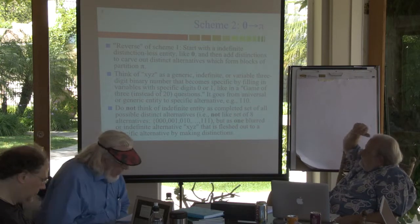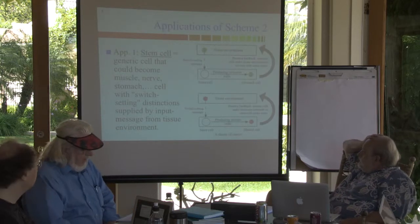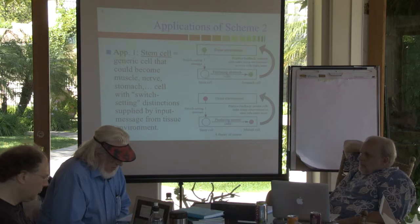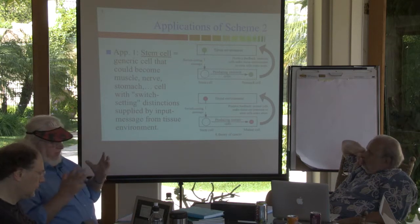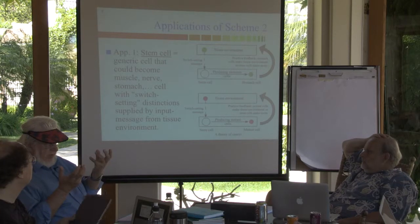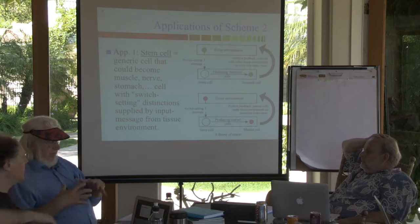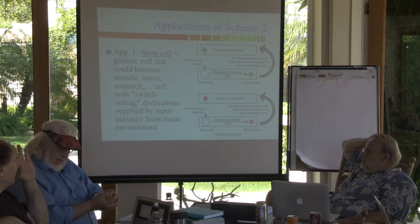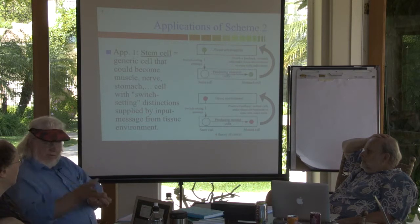Application: stem cells. A stem cell is something like all the possible types of cell where they haven't been differentiated yet. You have this universal — think of it as a set of possibilities unrealized that can potentially grow into a nerve cell, a muscle cell, a stomach cell, or a brain cell, if given the appropriate environment. The environment sends the message to the stem cell to develop in one way rather than another.